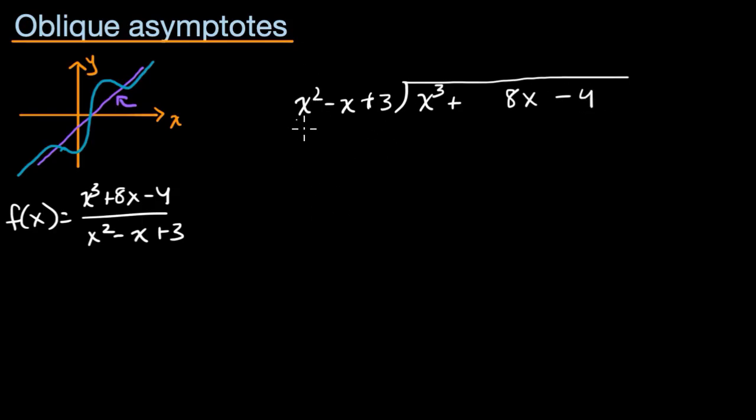And now let's do it. So look at the highest degree terms. X squared goes into x cubed, x times. I'll write that in the x place. X times all of this business. X times x squared is x cubed. X times negative x is negative x squared. X times 3 is 3x plus 3x.